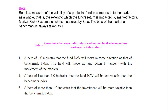Beta greater than 1 means the investment in LNT is going above the market — it is beating the market, going above NSE Nifty or BSE Sensex. When Sensex is going up by 10%, LNT stock is going up by 20%. Because of that, the beta will be 2, because LNT is moving double upwards as compared to the benchmark.